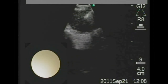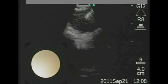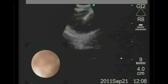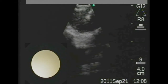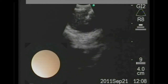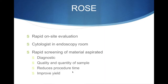Once the needle is into the lymph node we can needle it a few times to aspirate cells out of that lymph node. ROSE stands for Rapid On-Site Evaluation — this is where we have a cytologist in the endoscopy room to rapidly screen aspirated material to ensure that we have a diagnostic sample and enough sample for all the additional testing that will be required on those malignant cells.